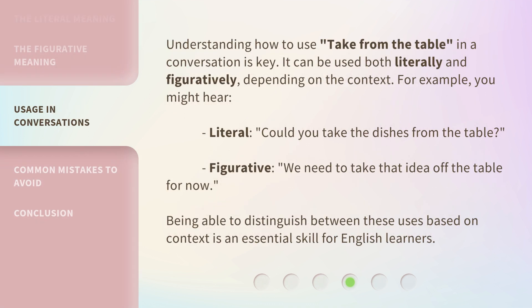Understanding how to use take from the table in a conversation is key. It can be used both literally and figuratively, depending on the context. For example, literally: "Could you take the dishes from the table?" Figuratively: "We need to take that idea off the table for now." Being able to distinguish between these uses based on context is an essential skill for English learners.